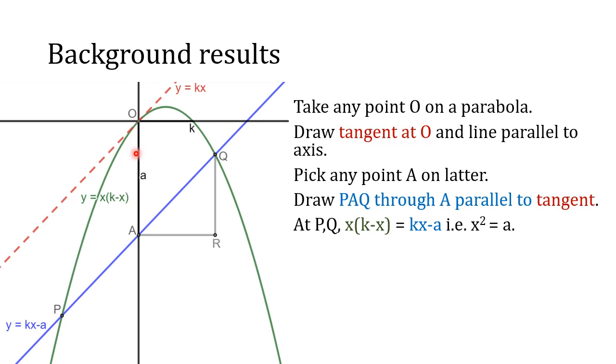We go directly down from O along the axis of symmetry, pick any old point A which is lower A down from O, and draw a chord in the parabola parallel to the tangent. That line will have equation y equals kx minus A. Where it meets the parabola at P and Q, we have x times k minus x equals kx minus A, which boils down to x squared equals A. This result allows us to see important properties of the parabola extremely quickly. In terms of x-coordinates, A is in the middle of P and Q because they have root A and minus root A as their x-coordinates. A has zero, so PA equals AQ.